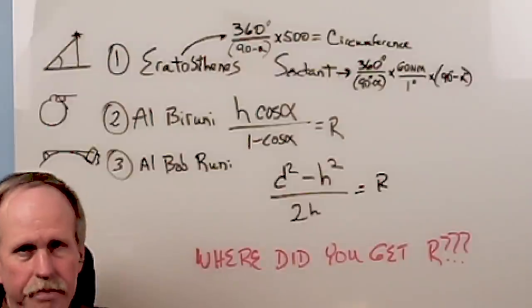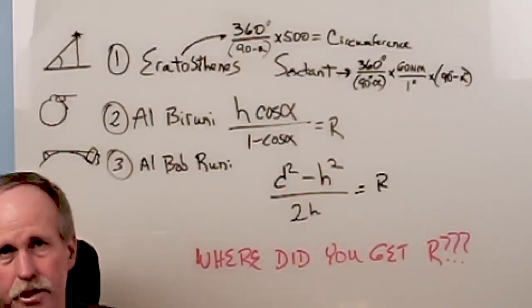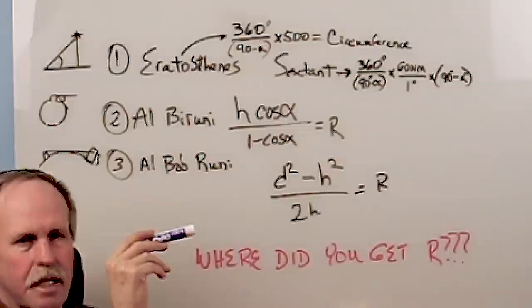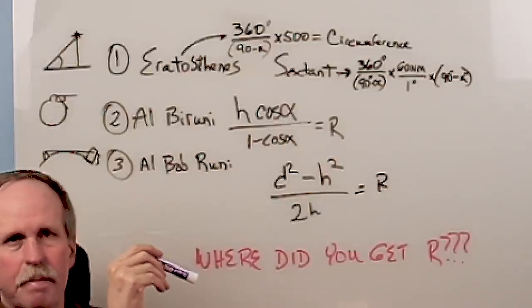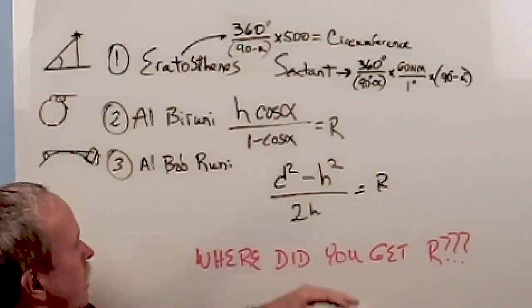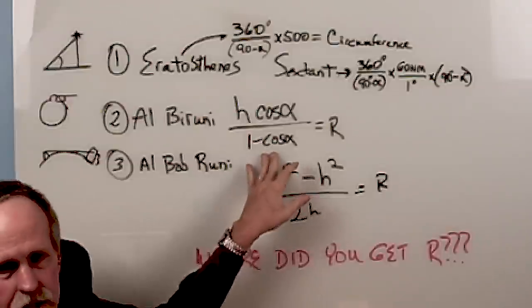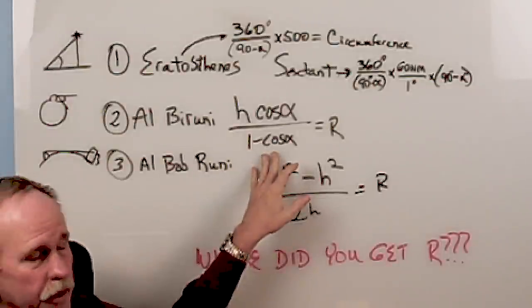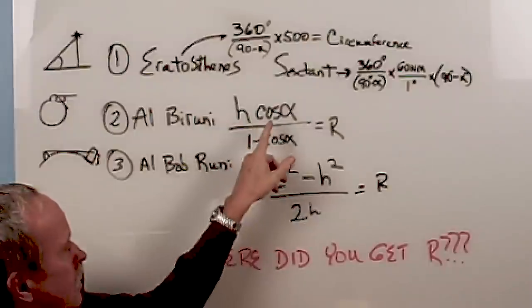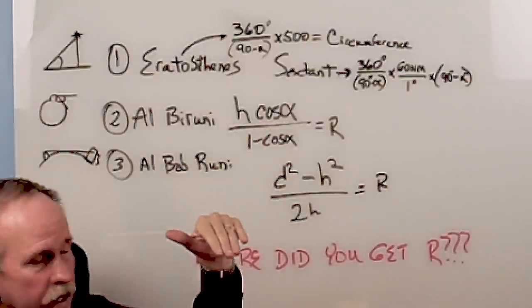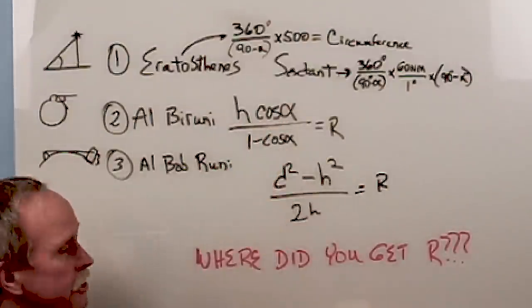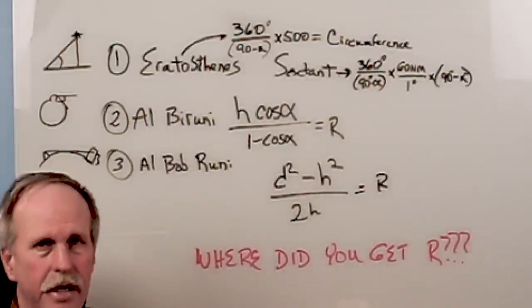Next came Al-Barouni. And Al-Barouni measured the radius directly by measuring the dip angle from the top of a mountain to the horizon. Here's the mathematics that he used. This is the classic Al-Barouni formula. Height of the mountain times the cosine of that dip angle over 1 minus the cosine of the dip angle equals the radius.